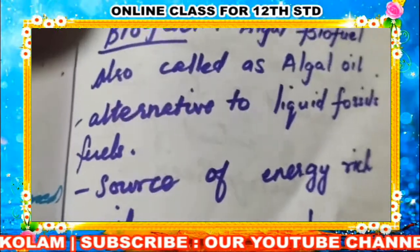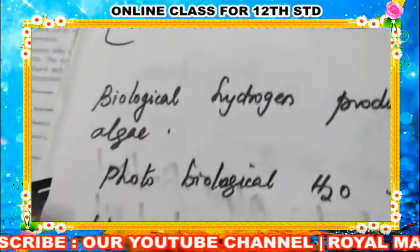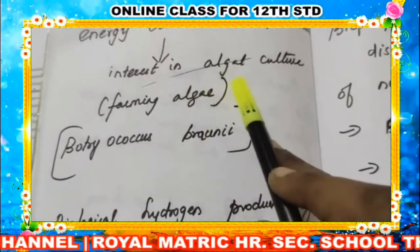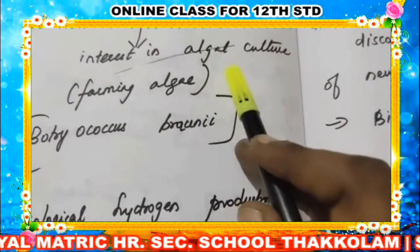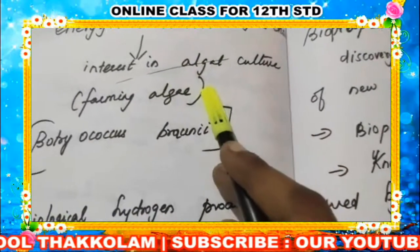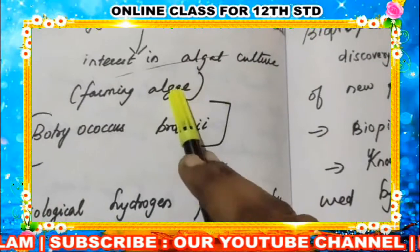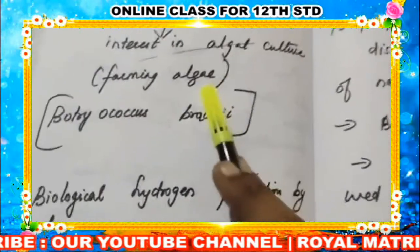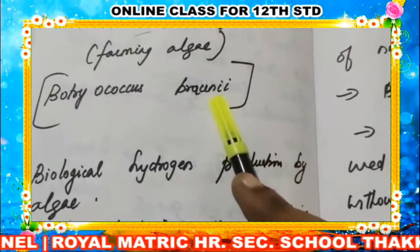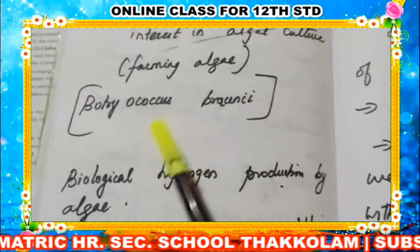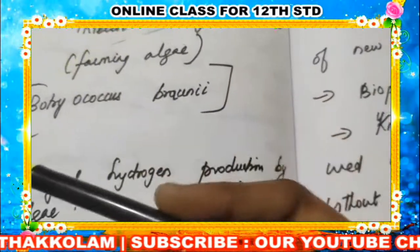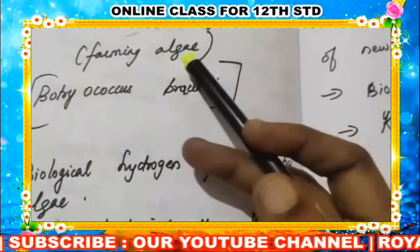Energy from algal biofuel is obtained from corn and sugarcane as well. The energy crisis and the demand for oil have initiated the use of algal culture — also called algal fuel oil. Algal culture is also called farming alga, for making biodiesel and biofuels. This type of biofuel is used on land that is unsuitable for agriculture.